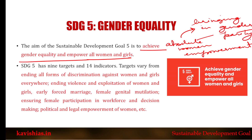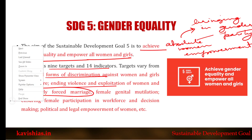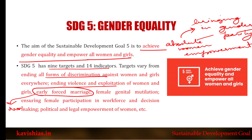SDG 5 has nine targets and 14 indicators. The targets range from ending all forms of gender discrimination, ending violence and exploitation of women and girls, and ending early and forced marriage — which is one reason why girls often drop out from school and higher education and do not get the chance to attain basic employment. Apart from that, social evils like female genital mutilation and various kinds of sexual harassment are also prevalent.